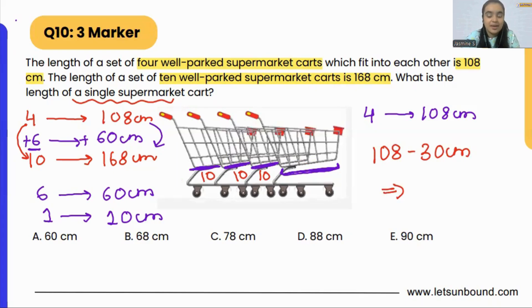So, our answer from here is going to be, what is 108 minus 30 cm? Yes, it is going to be 78 cm. C option is correct.